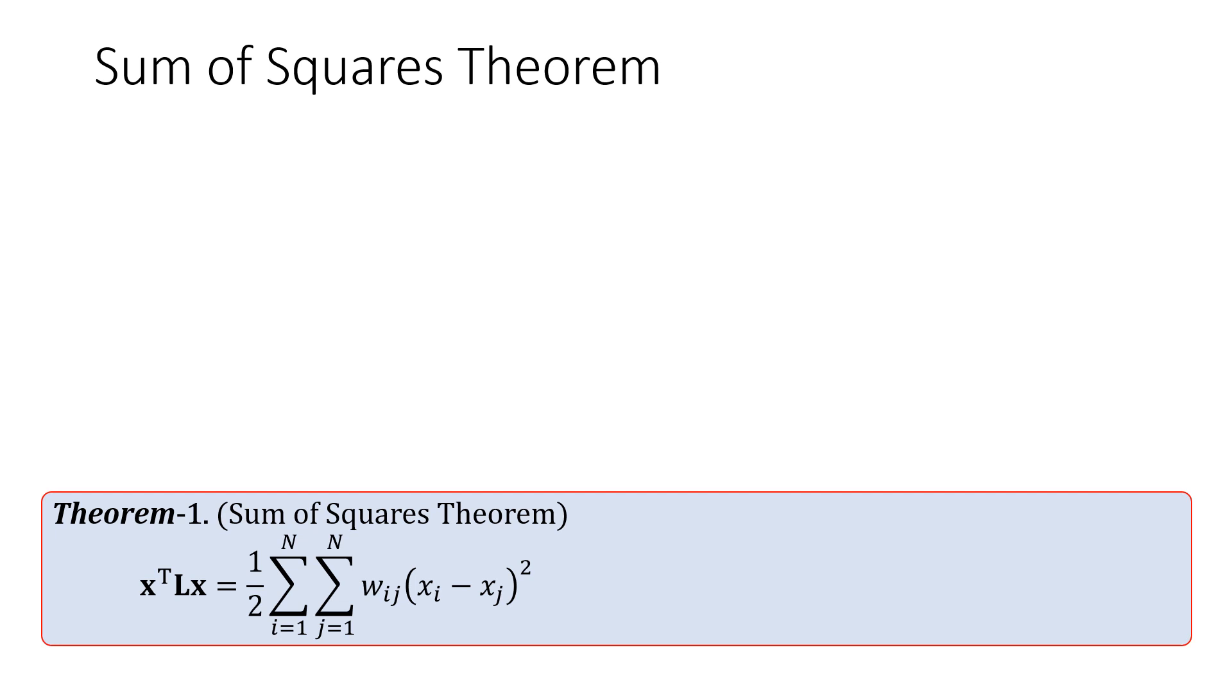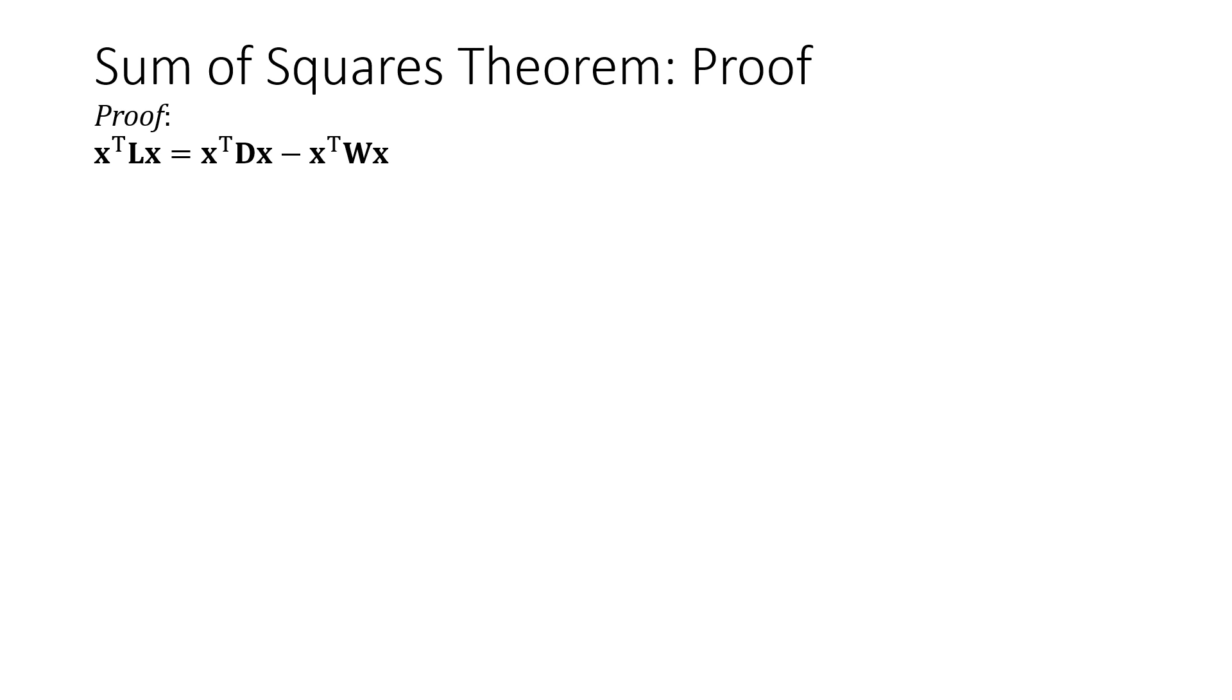So this is the statement of the sum of squares theorem. Now let's prove it. We begin with the definition L equals D minus W. So x transpose Lx equals x transpose Dx minus x transpose Wx.